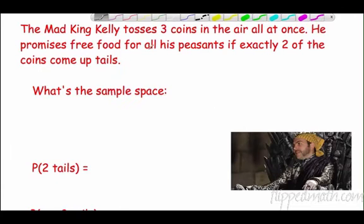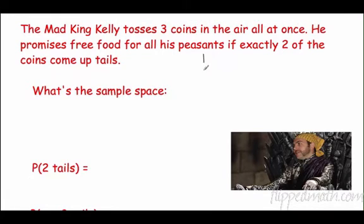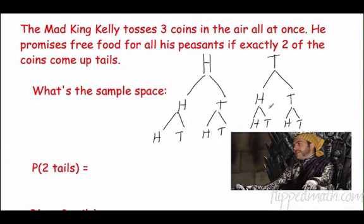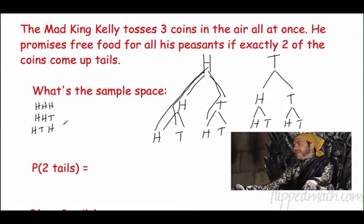The mad king Kelly tosses three coins and promises free food for all if two come up tails. Let's make a tree diagram. The first toss could be heads or tails. Each of those branches into heads or tails for the second toss, and again for the third. Tree diagrams help us find the entire sample space.